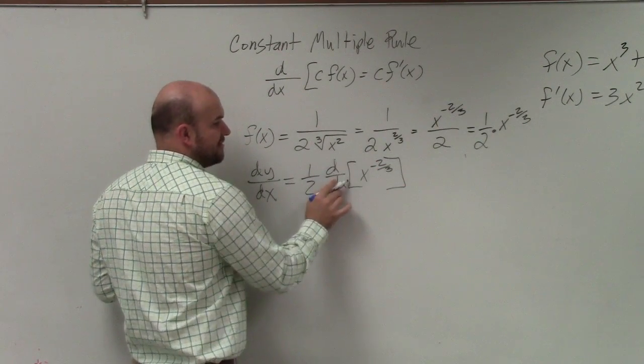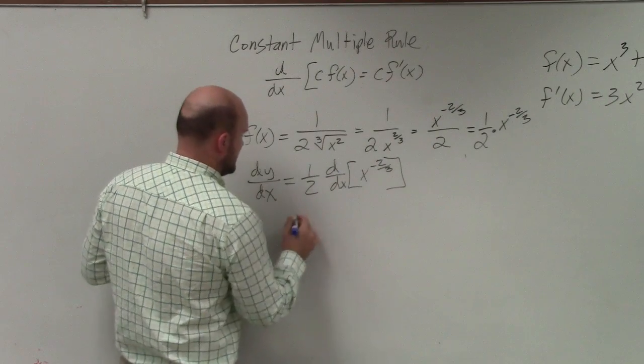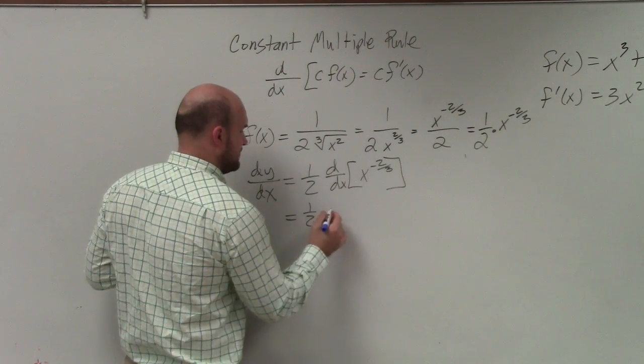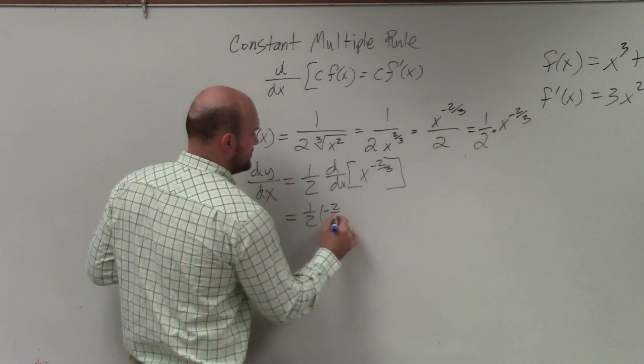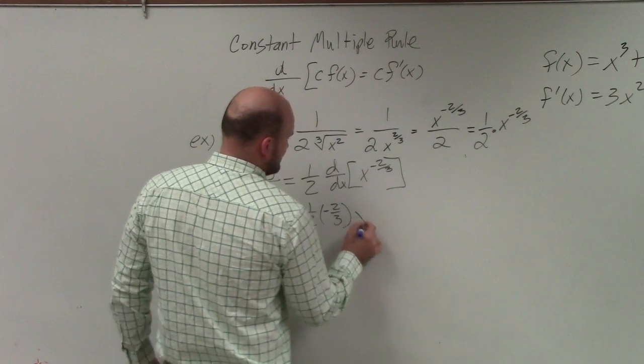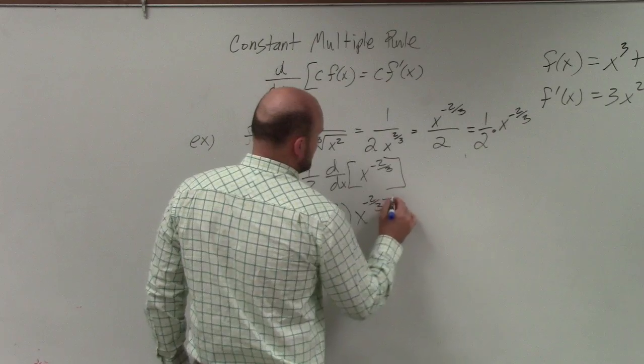I take my power, bring it down in front, and then subtract. So that's going to give me 1/2 times -2/3, times x^(-2/3 - 1).